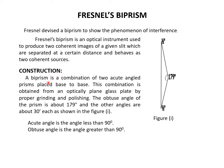Coming to construction, a biprism is a combination of two acute-angled prisms placed base to base. The acute angle means the angle less than 90 degrees and obtuse angle means the angle greater than 90 degrees. This biprism can be considered as the combination of two acute-angled prisms arranged base to base, obtained from an optically plain glass plate by proper grinding and polishing. The obtuse angle of the prism is about 179 degrees.